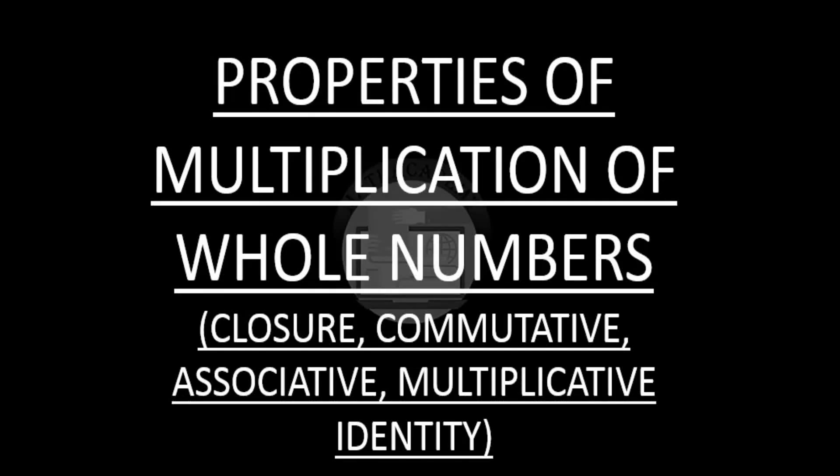After seeing the properties of addition of whole numbers — the closure, commutative, and associative properties — in this video let us understand the properties of multiplication of whole numbers. We will be covering the closure property of multiplication, the commutative law of multiplication, the associative law of multiplication, and the multiplicative identity.